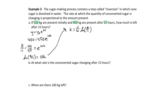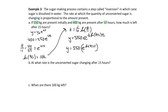Putting this all together and simplifying: y equals 550 e to the (1/10) ln(8/11) times t. Using the same manipulation as before, we bring e and the natural log together to get y equals 550 times (8/11) to the t over 10. The t/10 counts how many 10-hour intervals we're dealing with.